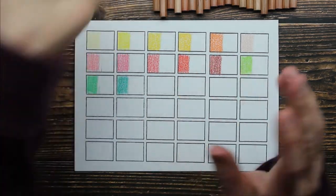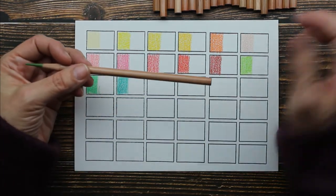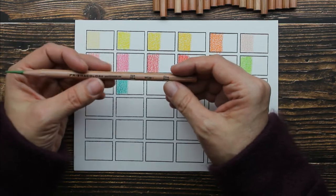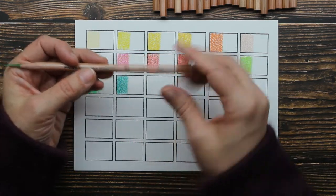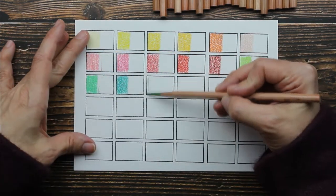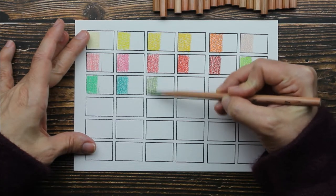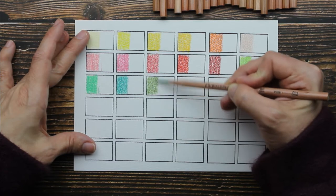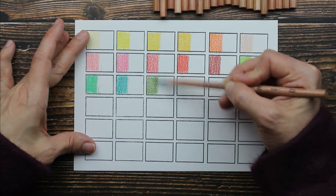But Prismacolors lately have been, I think everybody who has them notices they tend to break easy. I don't know why. This color is called Olive Green. I love Olive Green. Beautiful color.